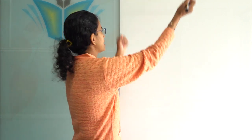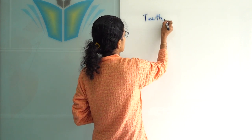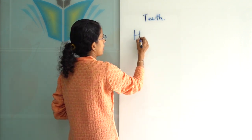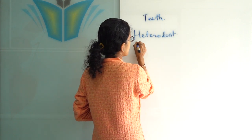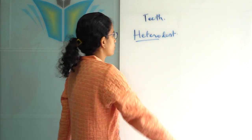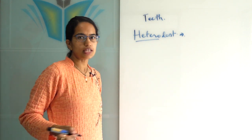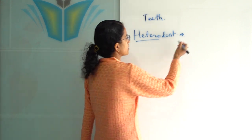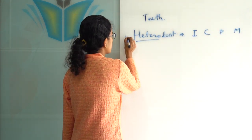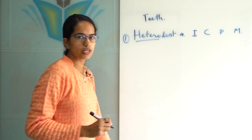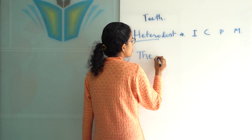Welcome. In this session we will understand three important characteristics of human teeth. The first characteristic is that human teeth are heterodont. 'Hetero' means different and 'dont' refers to dentition, so there are different types of teeth present — incisors, canines, premolars, and molars. So human teeth are heterodont in nature.